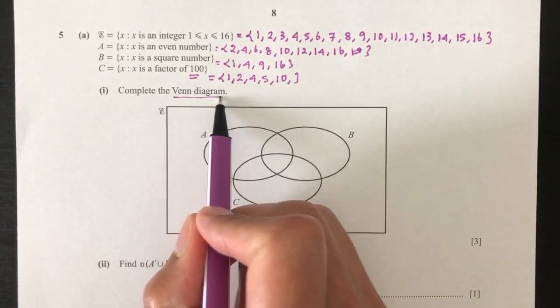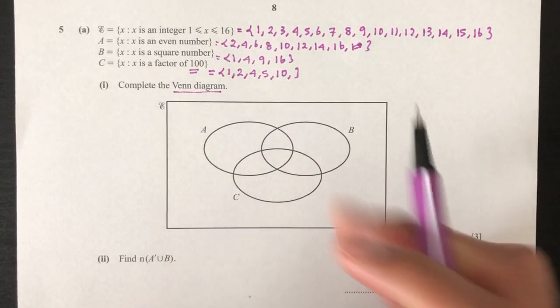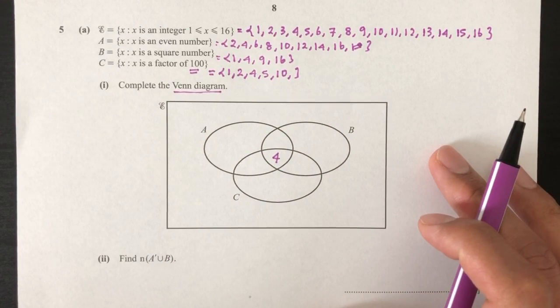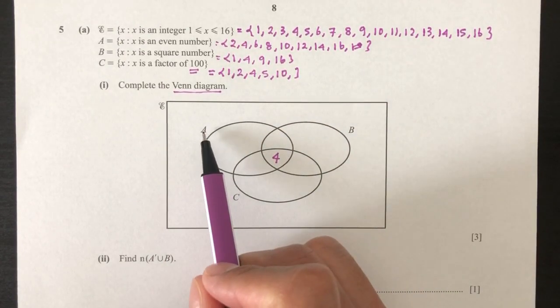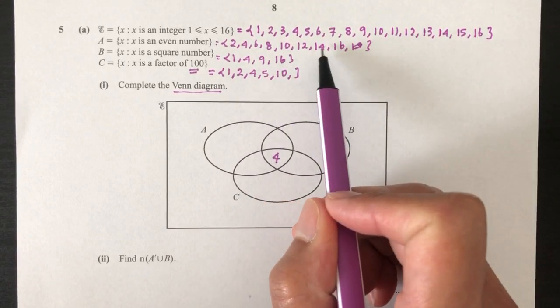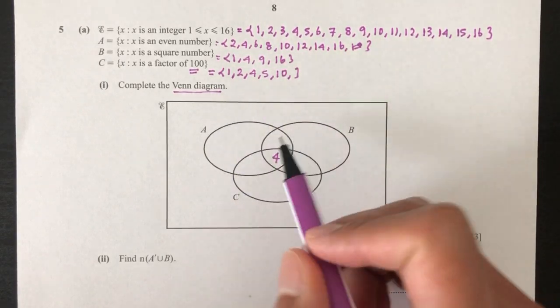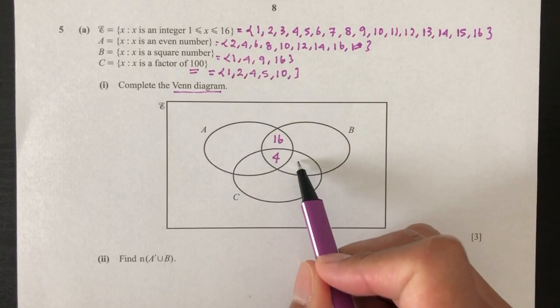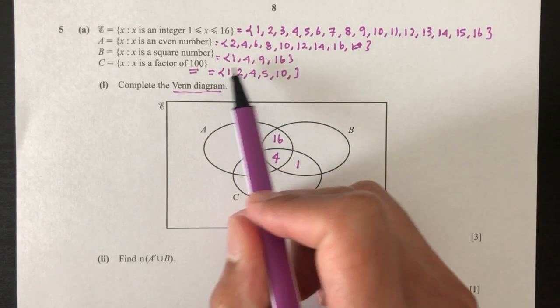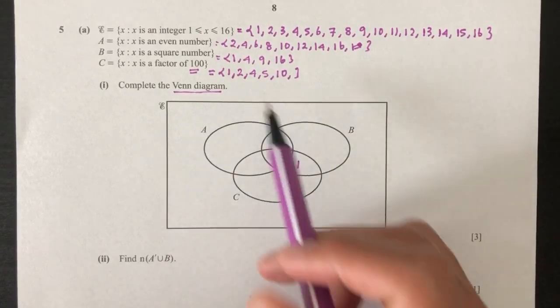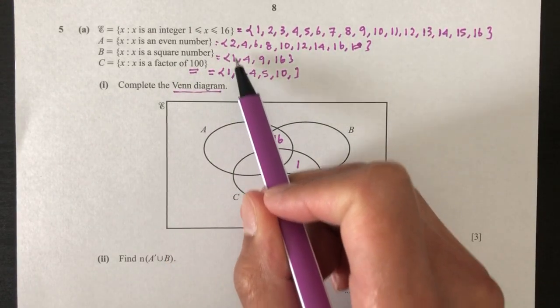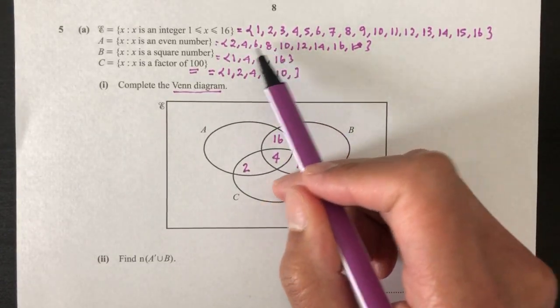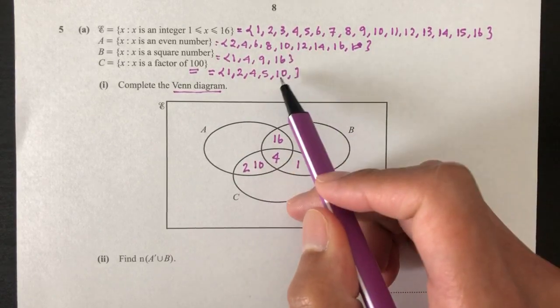Now part 1, complete the Venn diagram. So what is common with all those three? As you can see here, we have 4, 4, 4. So 4 is common on all those three sets. That's the first step. Now what is common between A and B? A and B has 16 in common so 16 will be right here. Now what is common between B and C? B and C has 1 in common. Also, A and C has 2, we have 10 in common. And that's it.